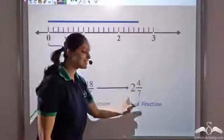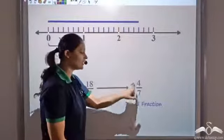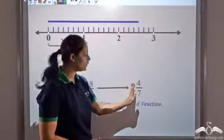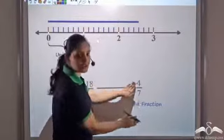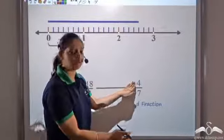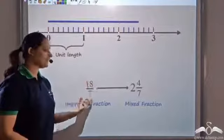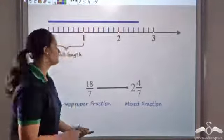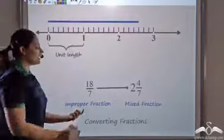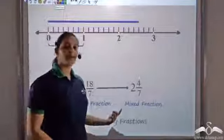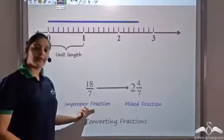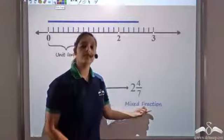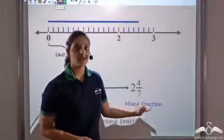This is called a mixed fraction. Why is it a mixed fraction? Because it has an integer part, which is two, and a fraction part, which is four by seven. So I can write eighteen by seven as two and four by seven. This way of writing it is called converting fractions — I have converted an improper fraction to a mixed fraction.